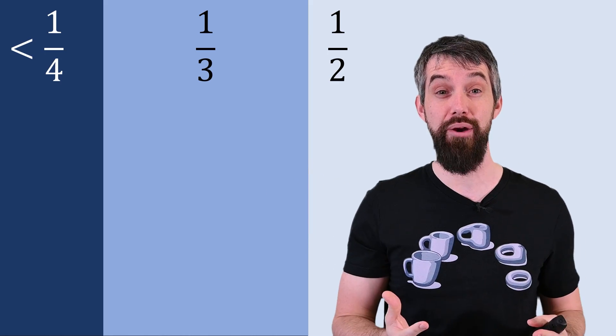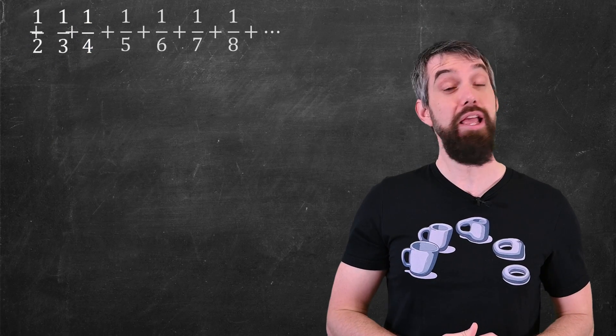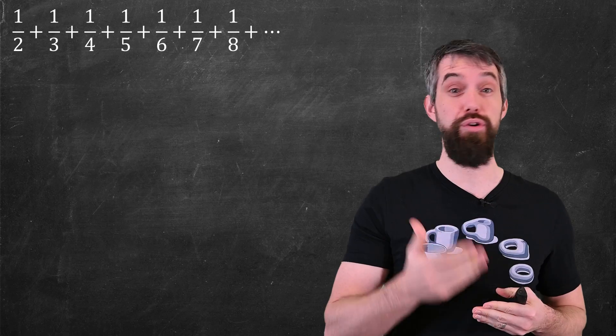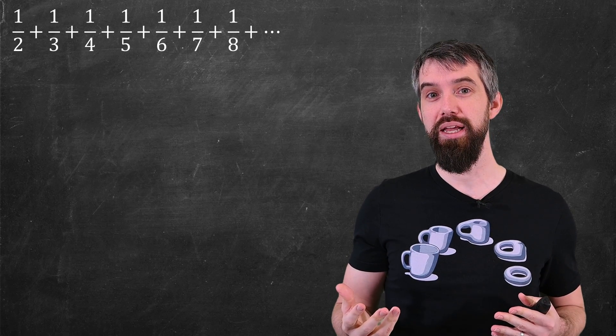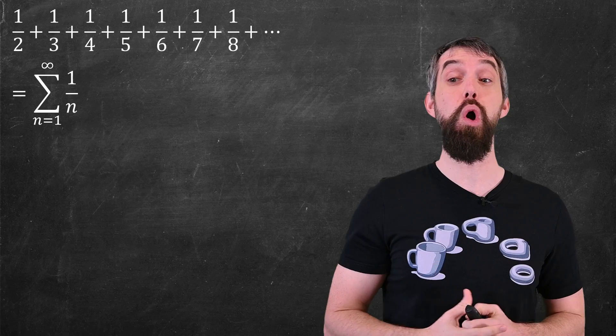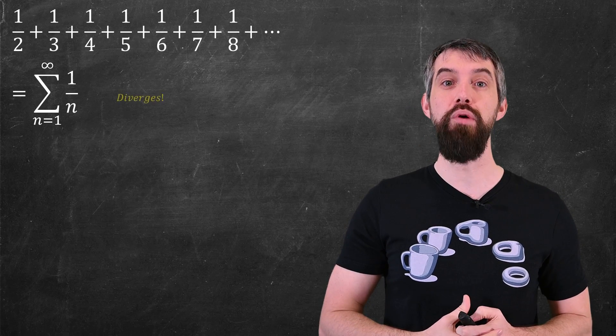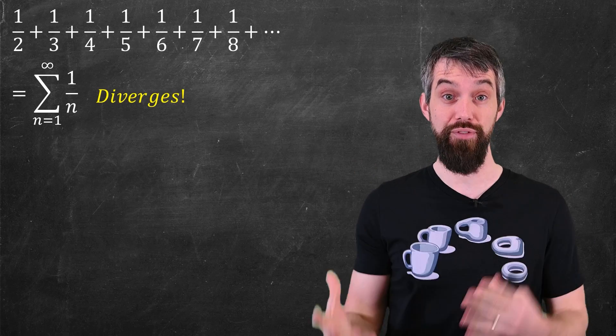And it turns out that if you take the sum of a half and a third and a quarter and keep on going like this, this doesn't converge to a number. This so-called harmonic series, the sum of one over n, it diverges to infinity.